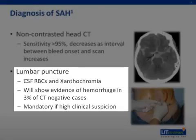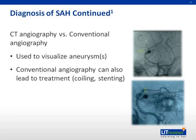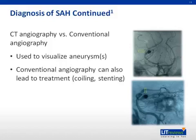The CSF sample is also examined for xanthrochromia, or the yellowing appearance of centrifugated fluid. An interval of at least 12 hours between the onset of the headache and lumbar puncture is required for xanthrochromia, as it takes several hours for the hemoglobin of the red blood cells to be metabolized into bilirubin, creating the yellowing of the CSF. For visualization of the aneurysm, two radiographic techniques are often employed. CT angiography is a quick and non-invasive tool to identify and characterize an aneurysm. Conventional angiography is also used. While there are more potential complications with conventional angiography, such as stroke, it can be used for not only diagnosing aneurysms, but also for treating them through coiling, as can be seen in the images on the right.